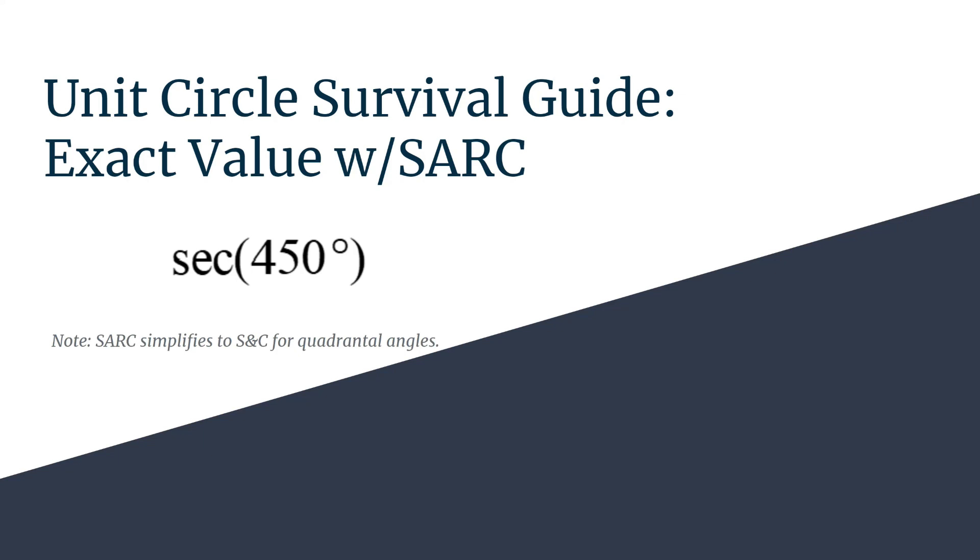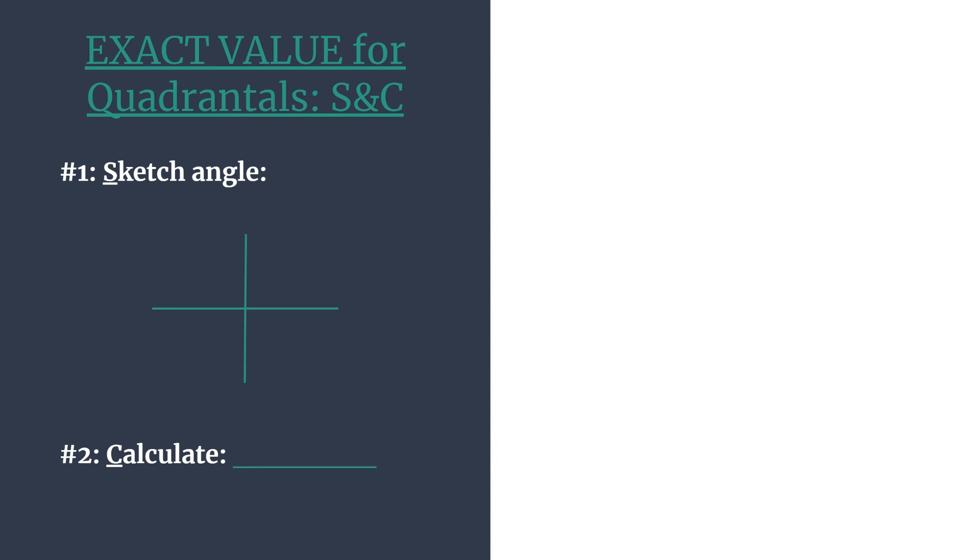So SARC will simplify to S and C, the first step and the last step for all quadrantal angles. Let's see how that actually works out. Here's our template for quadrantal exact values. The S is to sketch the angle - we'll sketch the terminal side and get the coordinates. Then the C is for calculate. We'll do this for the secant of 450.